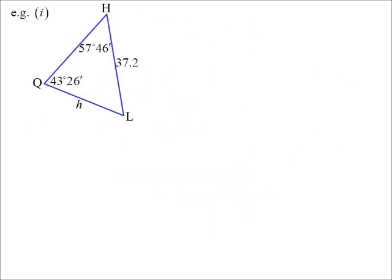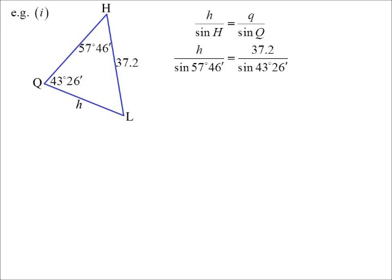Just a quick little example. In this case, we want to find a side. So H over sine H would be Q over sine Q. It's really just a substitution question when you think about it.